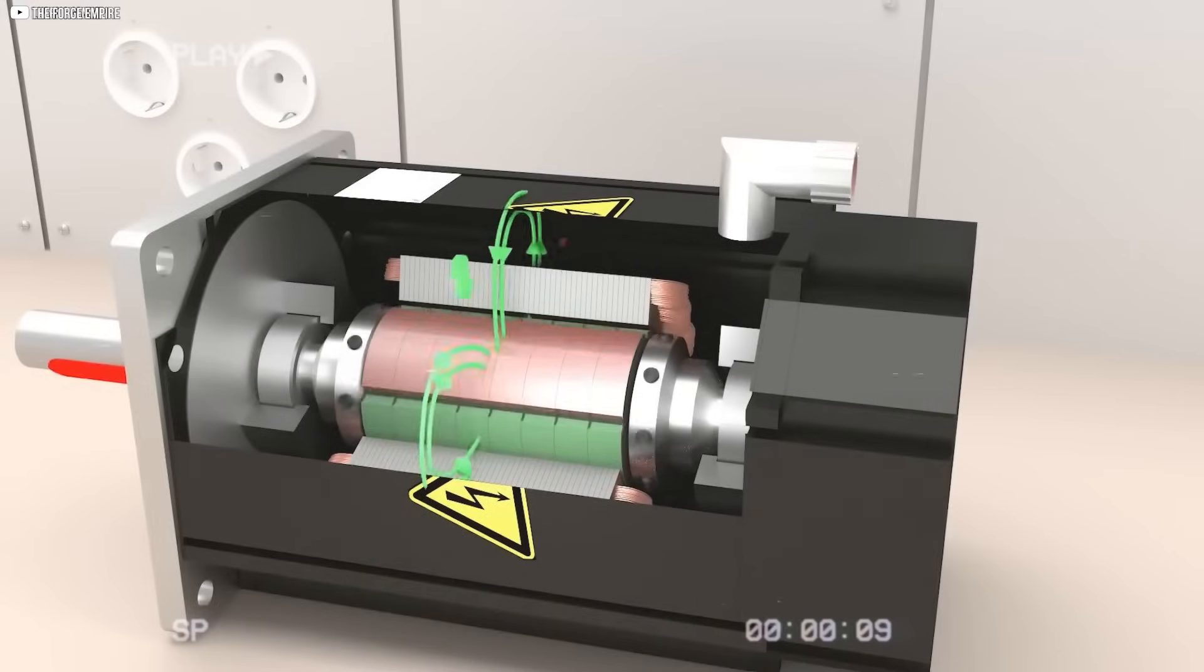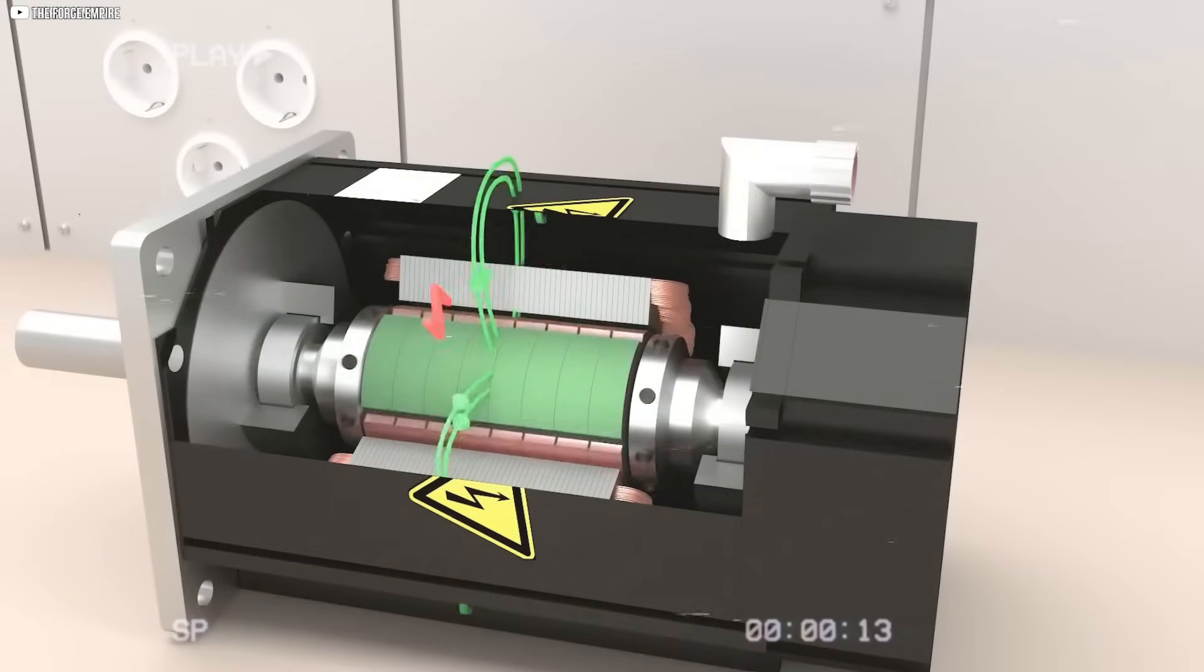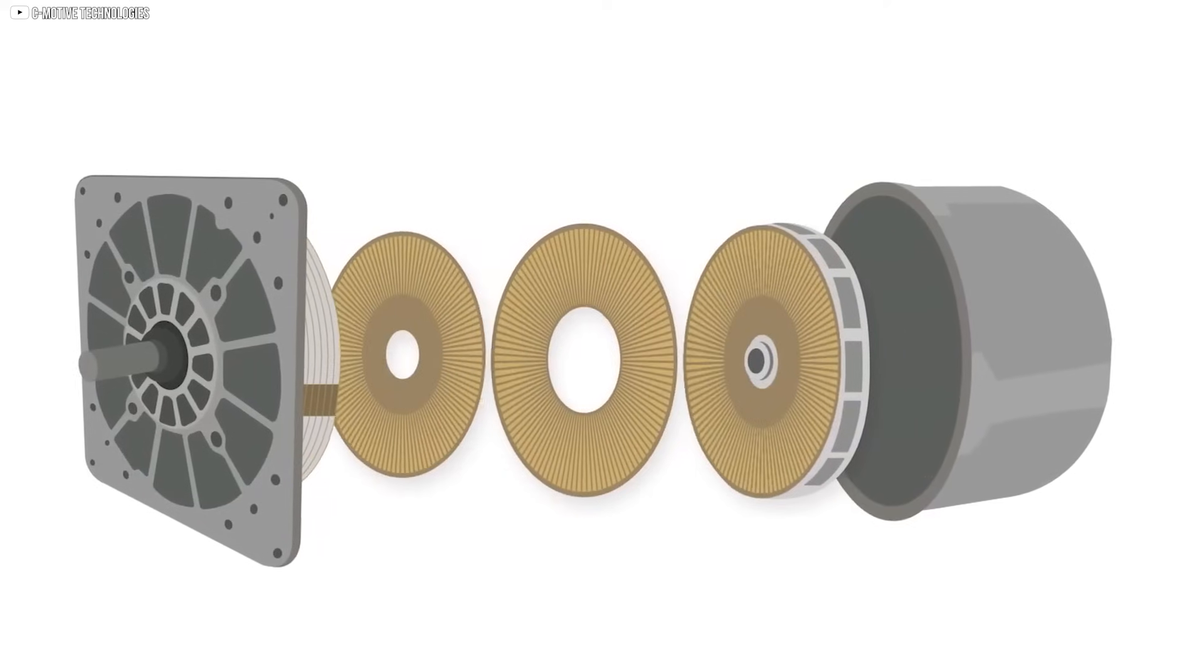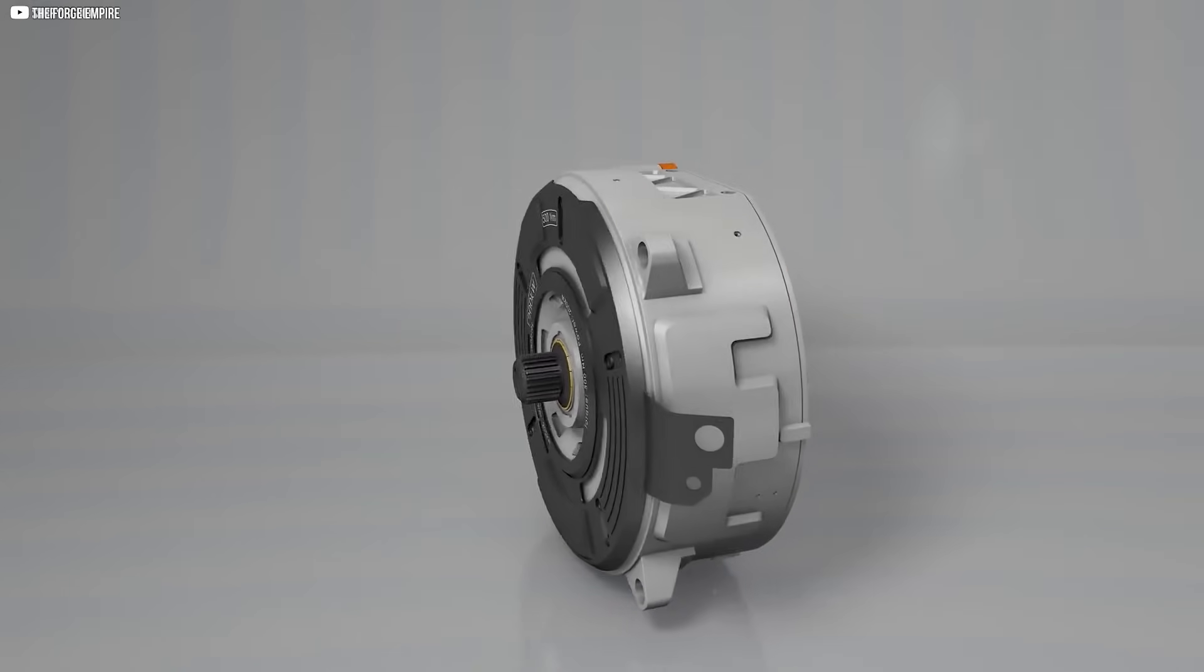High voltage creates risks of arcing, insulation failure, and serious safety concerns. C-Motive uses special fluids and careful design to control this, but it adds cost and complexity.